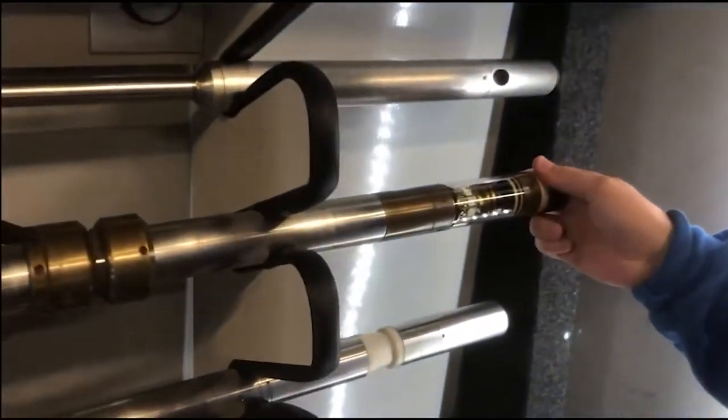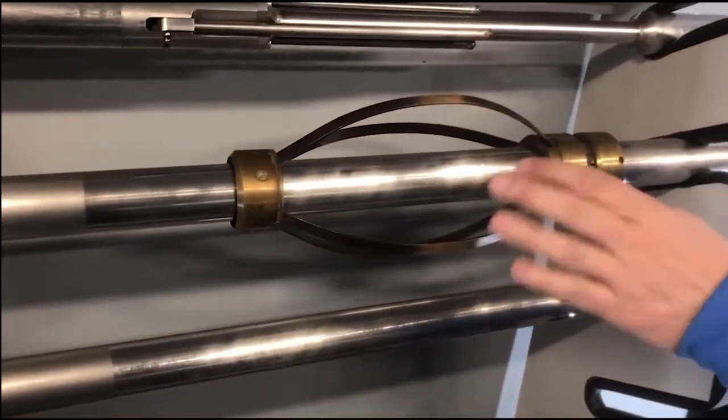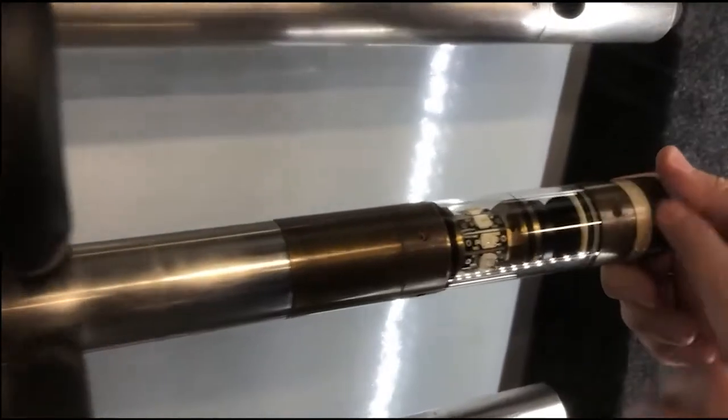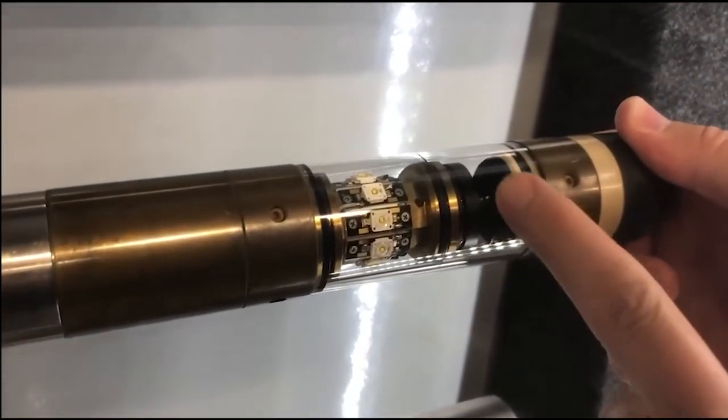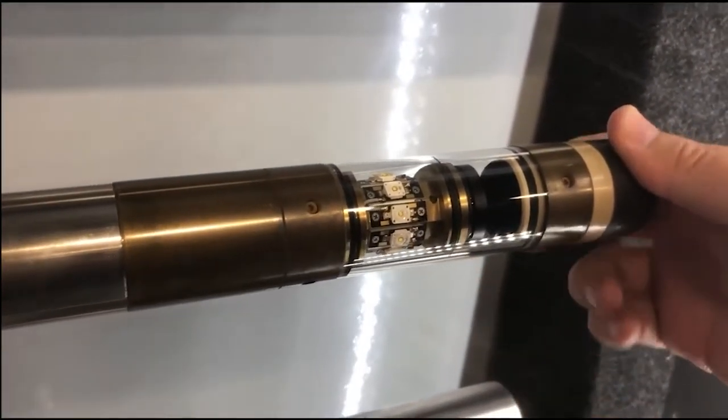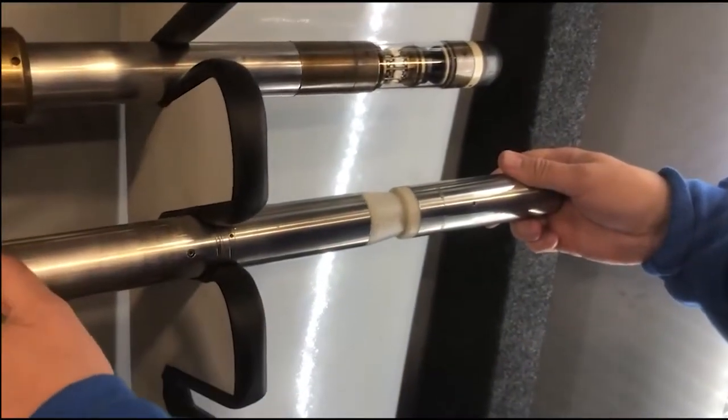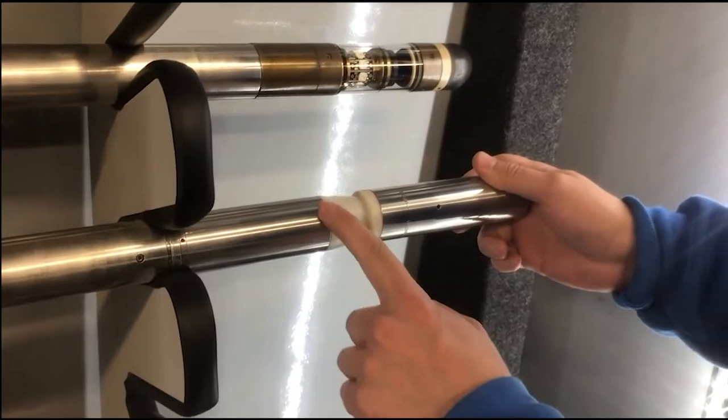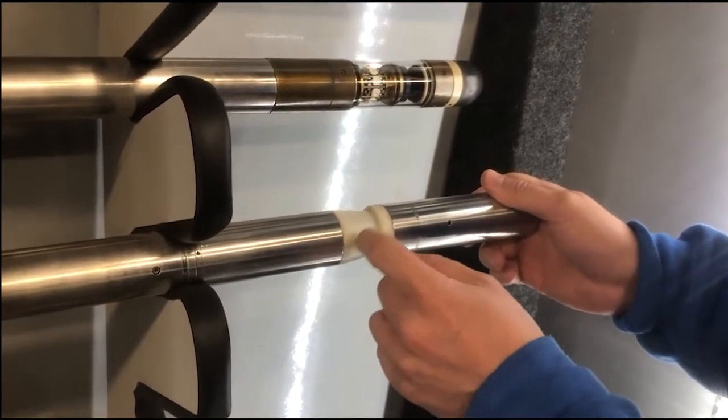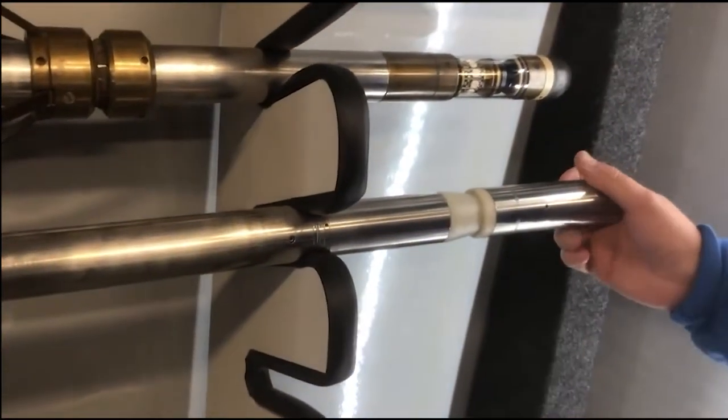Then we've got the optical televiewer, which is centralized in the borehole using these metal centralizers and has a convex lens and LED lights shown here. The acoustic televiewer also has the same centralizers. And this is the acoustic window where it sends out the acoustic wave that bounces off the borehole wall and back.